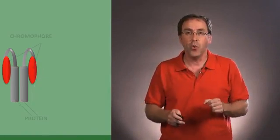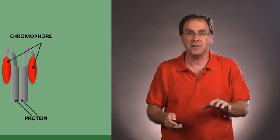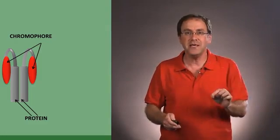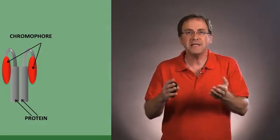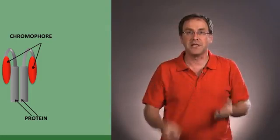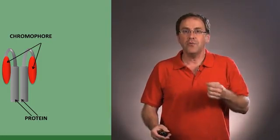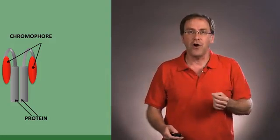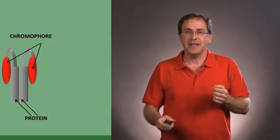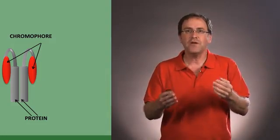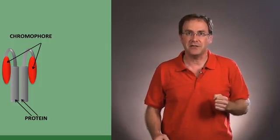So what we have here is a cartoon of how we imagine phytochrome to look. It's actually a protein which has two different components. One is the protein component here and the other is what we see here on the top, the chromophore. This is the part of the protein which absorbs the light. Now phytochrome can absorb either red or far red light because it can be found in one of two conformations in the cell.